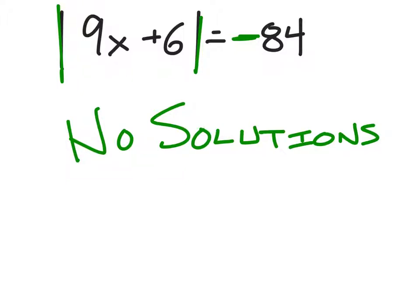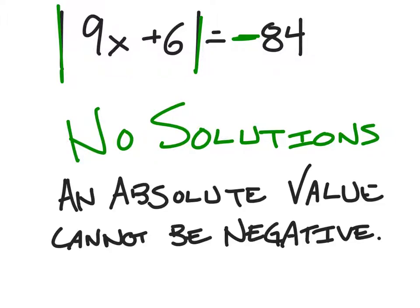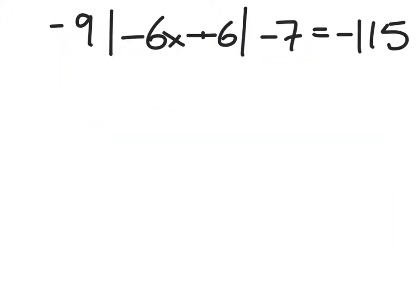On this problem, if all you write is 'no solutions,' you may only get 2 out of 4. To get full credit, you need to spell out what you did. An absolute value cannot be negative. A lot of you look at the problem and say no solutions because the absolute value equals a negative — but first, we need to get the absolute value by itself, like in the previous problem.